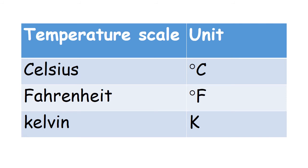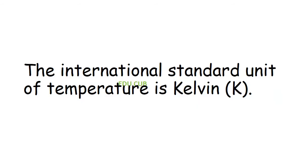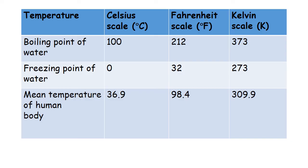Here you can see a mercury thermometer and an alcohol thermometer. The mercury thermometer is the silver-colored one, and the alcohol thermometer is colored red. The units of measuring temperature: the Celsius scale uses the degree Celsius (°C), Fahrenheit uses degree Fahrenheit (°F), and Kelvin uses K. The international standard unit of temperature is Kelvin. The equivalence between principal temperature scales is given in this table.